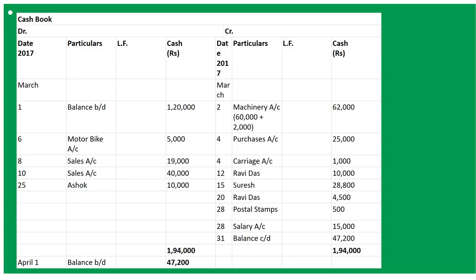Now one more new topic is to be started: Two Column Cash Book — cash book with both bank and cash columns. Till now we have done only cash entries. Now there will be bank entries as well, related to bank transactions in which you have used a cheque or done bank transactions.